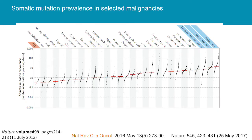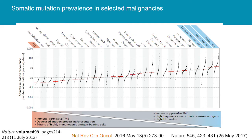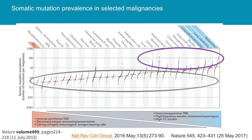No modern talk on immunotherapy would be complete without this figure. Each dot represents a tumor-normal pair from a single patient. On the y-axis in a log scale are the median number of coding mutations per megabase, sorted by median number of mutations per disease. On the left, you have diseases like leukemias and sarcomas that are relatively mutation-poor. On the right, you have tumors like lung cancer and melanoma driven by a large number of mutations, resulting in different tumor microenvironments.